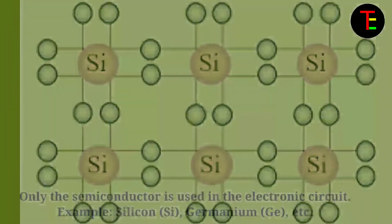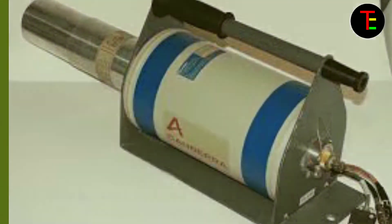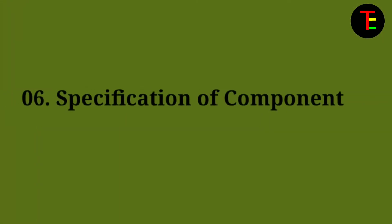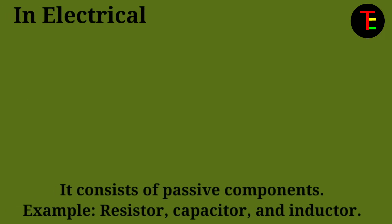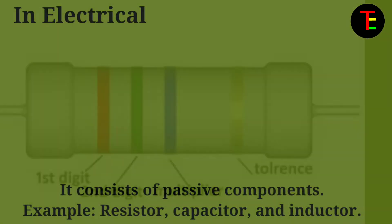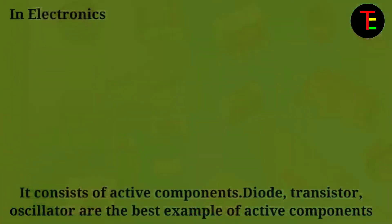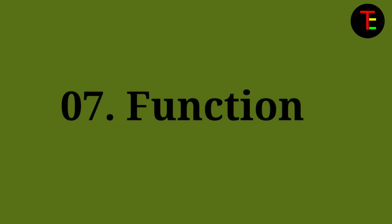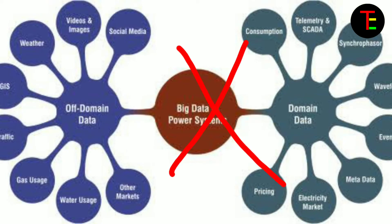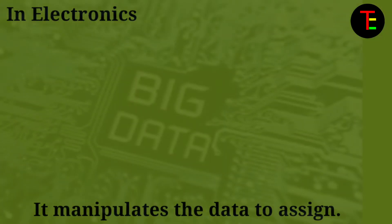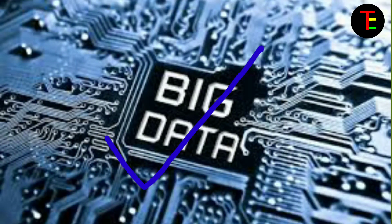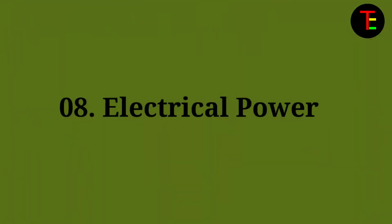No.6 Specification of active components: In electronics, it consists of active components. Diode, transistor, and oscillator are the best examples of active components. No.7 Functions: In electrical, they cannot manipulate the data. But in electronics, it manipulates the data to assign.